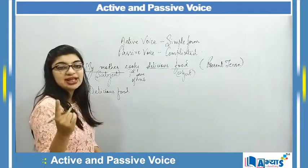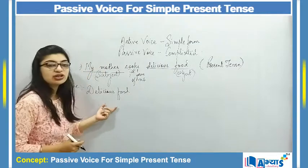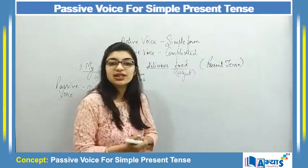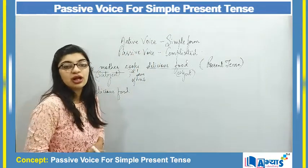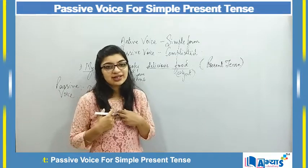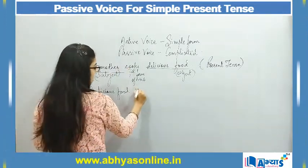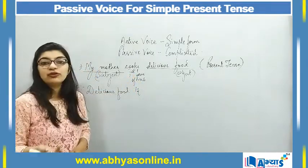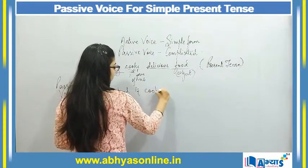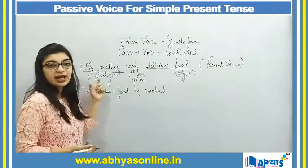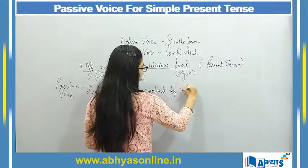Next, I have told you we use 'is,' 'am,' or 'are.' Since 'food' is singular, we will use 'is.' 'Are' is used when something is plural, and 'am' is used for 'I.' So 'delicious food' is singular, so I will say 'is cooked.' Who has cooked it? My mother has. So I will say 'by my mother.' The full sentence becomes: 'Delicious food is cooked by my mother.'